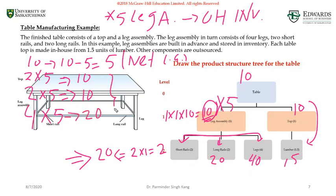That brings us back to what we discussed in the previous video. Always look into net requirements. If you're given on-hand inventories, discount those and calculate the quantities for the children based on new net requirements. That's what we did in the leg assembly case.